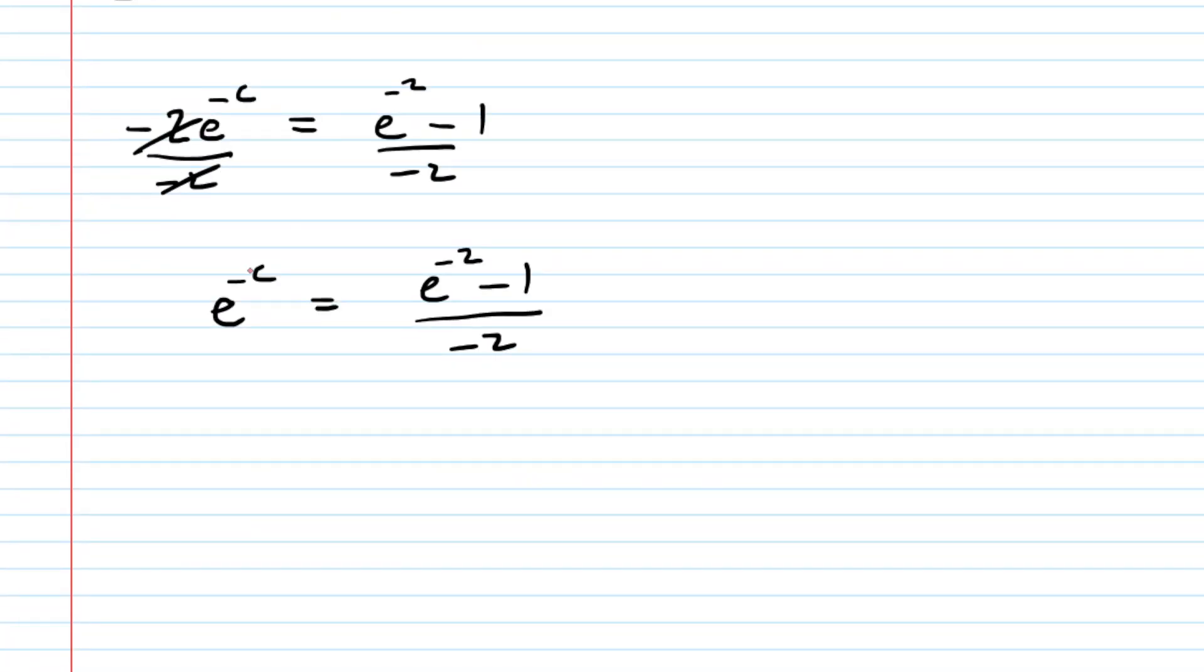Now we need to sort of bring this c down from the power. And to do that, remember that you can take the natural log on both sides. And by doing that, once we introduce a logarithm, there's a property that allows us to drag that negative c into the front. It sort of becomes a coefficient.